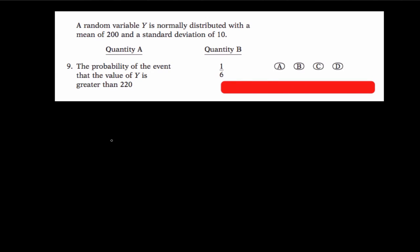Question number 9 of the revised GRE general test. A random variable Y is normally distributed with a mean of 200 and a standard deviation of 10. We are told to determine which is greater: quantity A, the probability that Y is greater than 220, or quantity B, the value 1 over 6.